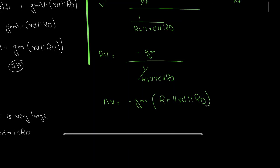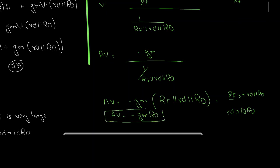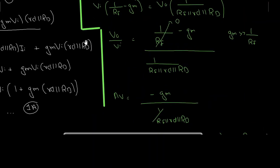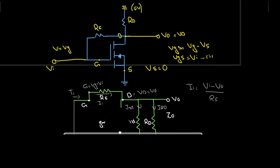So the voltage gain is Av = −Gm·RD. The negative sign indicates a 180-degree phase shift — the output voltage is out of phase with the input voltage. This concludes the AC analysis of the drain feedback configuration of the enhancement type MOSFET. Thank you.